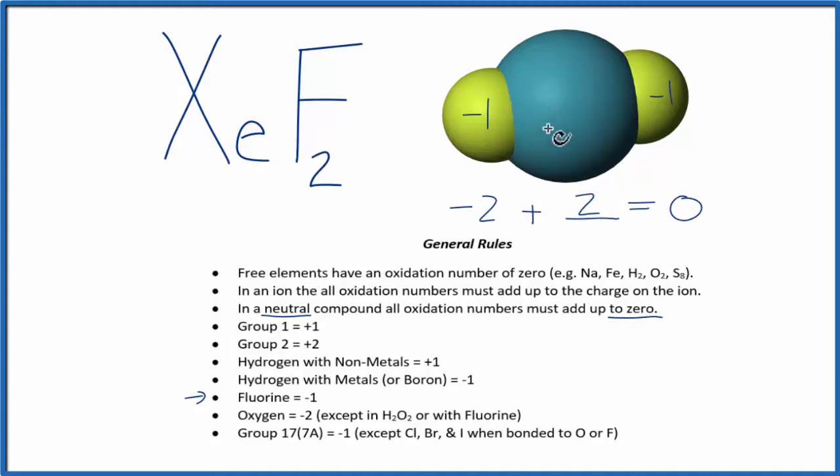So the oxidation number for the xenon in XeF2 is plus 2. To recap, we found the oxidation numbers for the elements we knew, the fluorines here, and we used the fact that in a neutral compound all the numbers add up to 0 to find the oxidation number here on the xenon.